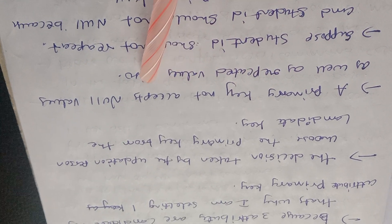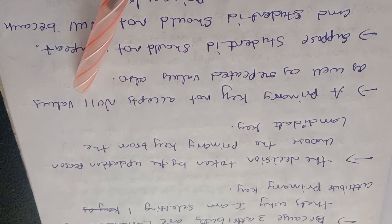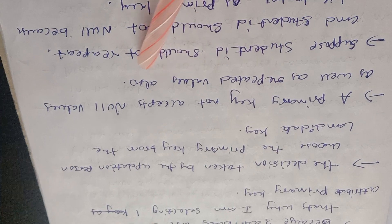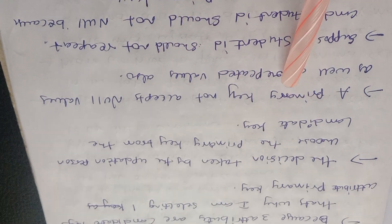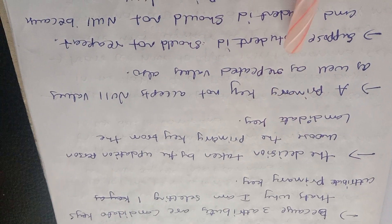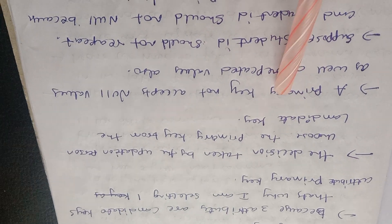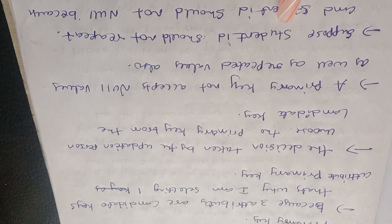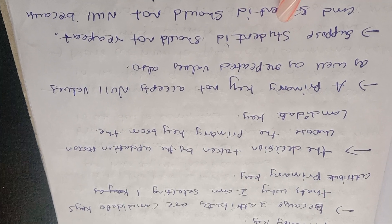The primary key doesn't accept null values or repeated values. For example, if we select student ID as the primary key, it is assigned value 111.